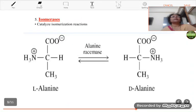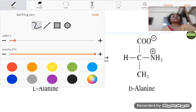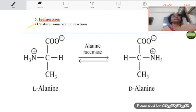Isomerases catalyze isomerization reactions. L-alanine racemase is the enzyme which catalyzes the reaction and from L-alanine its isomer D-alanine is formed.